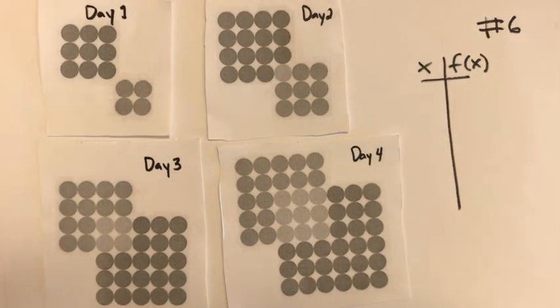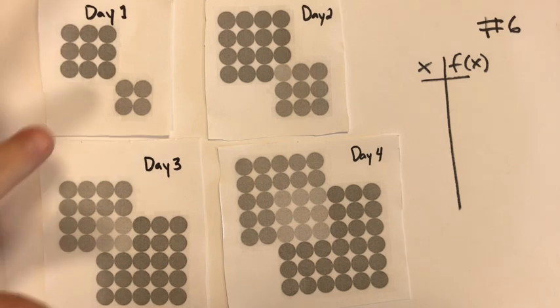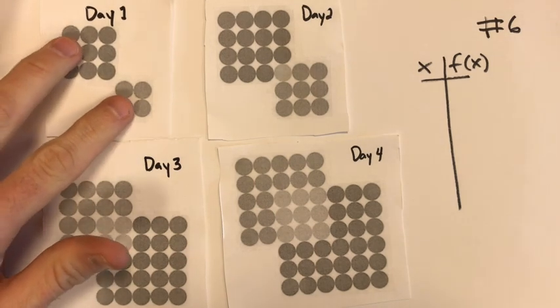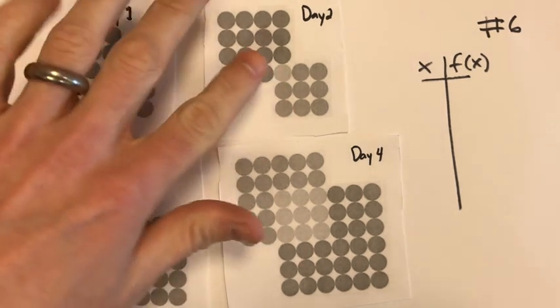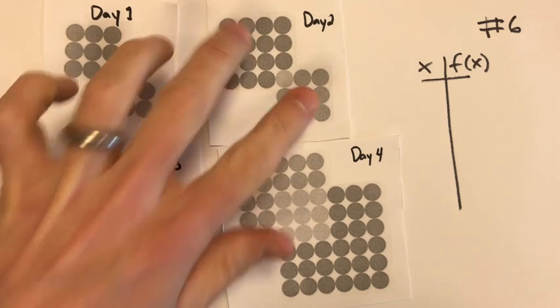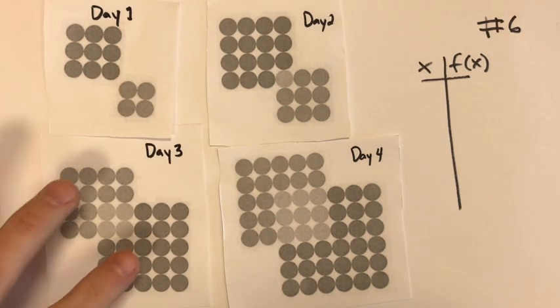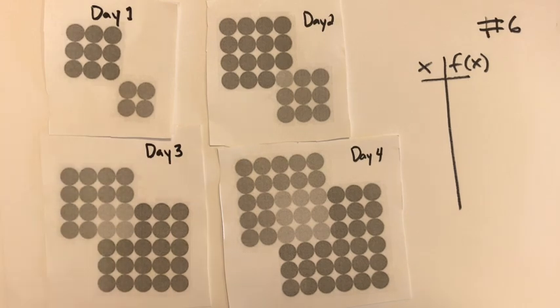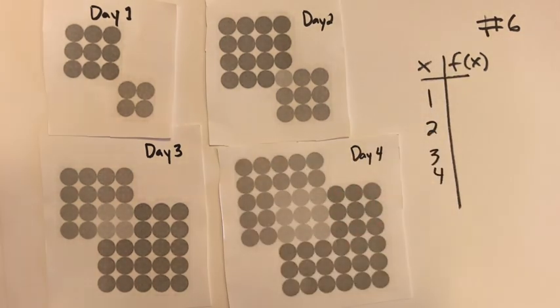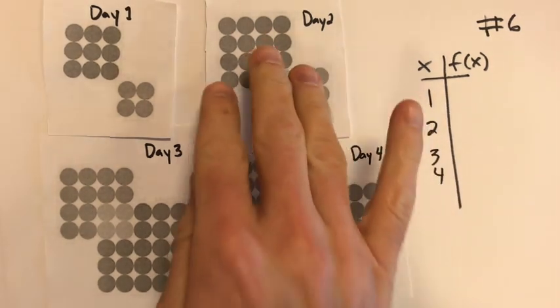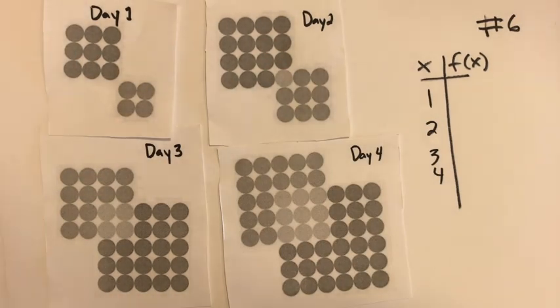In this example we've got a growth pattern here, maybe there's cells growing in a dish, whatever it is, it's an abstract idea. On day one here is the setup, this is how many cells there are. On day two we've got this setup, this is how many cells there are, and I'm going to let you count. On day three we've got this many, so they're obviously growing. And on day four we've got this many. So I'll let you fill it in. We've got day one, two, three, and four. x is time in days and f(x) is the number of cells or the number of dots that are visible that day.